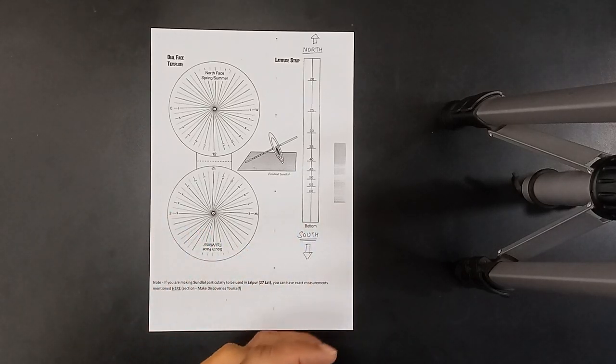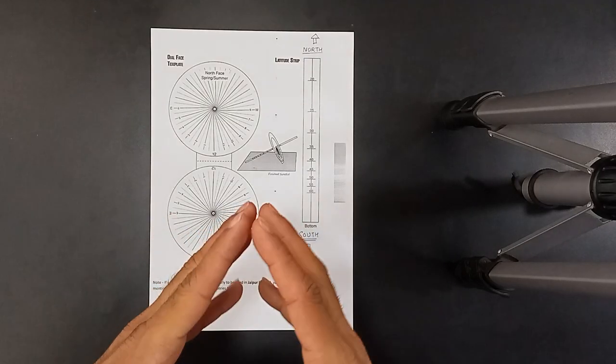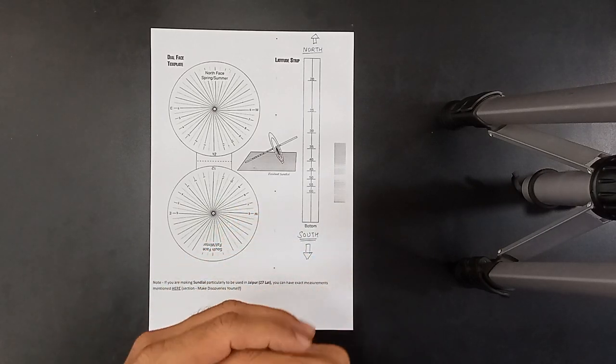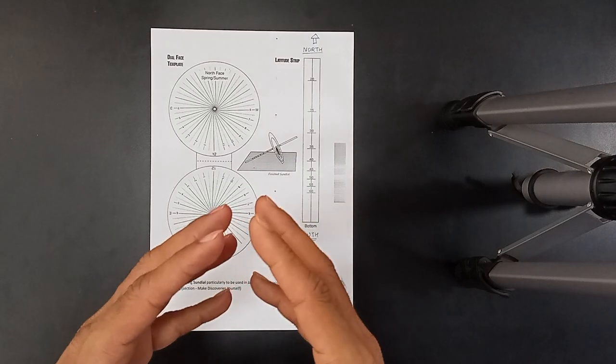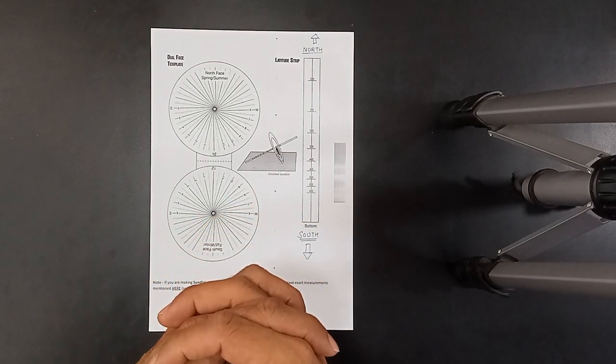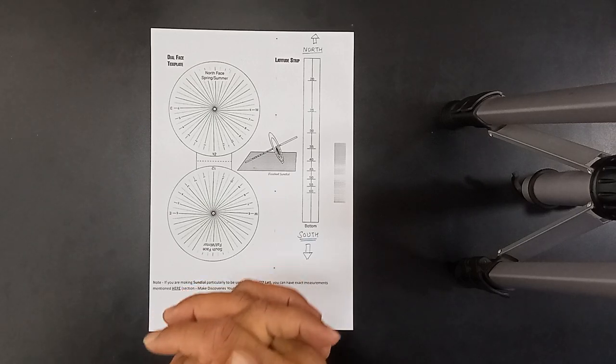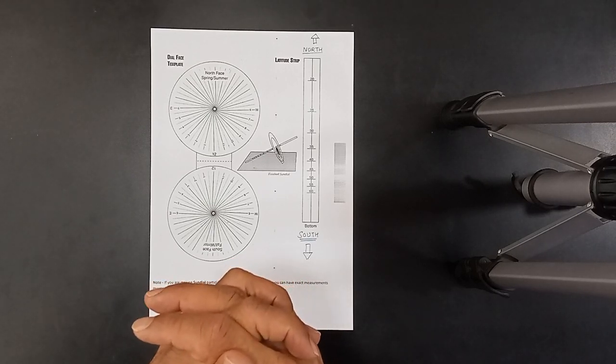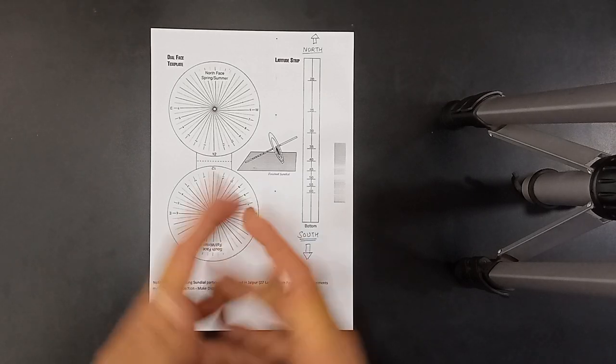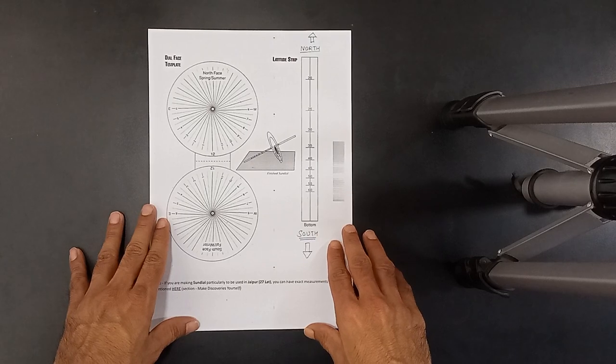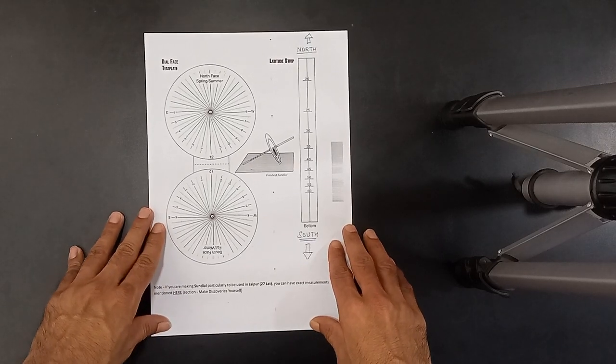Hello everyone, today in this video we are going to see how to make an equatorial sundial. First, what you have to do is go to our website skullandskill.com, go to astronomy pages, free learning resources. You will find buttons over there to download this. I have already taken a printout for you.